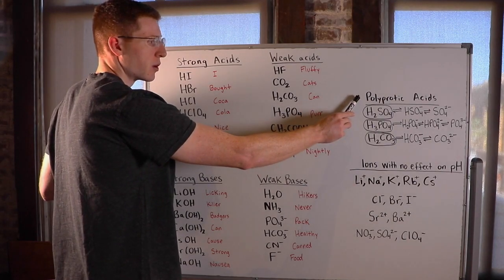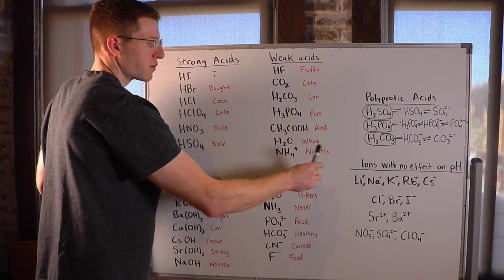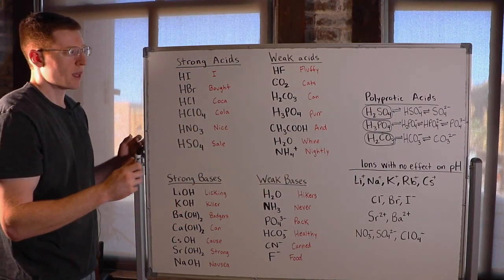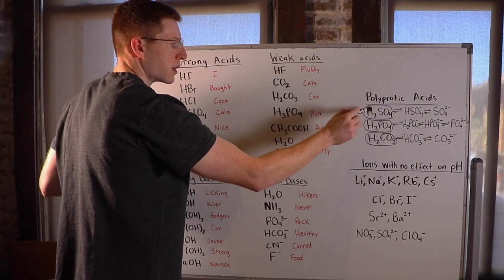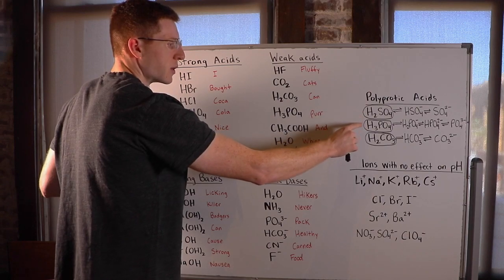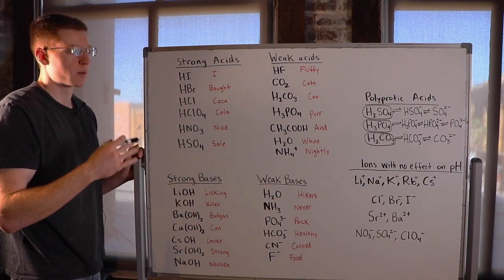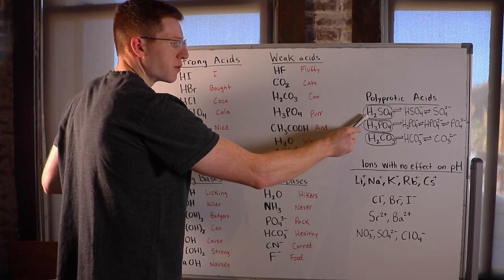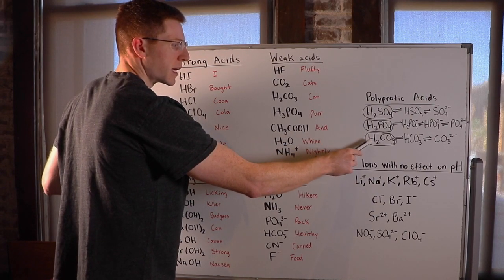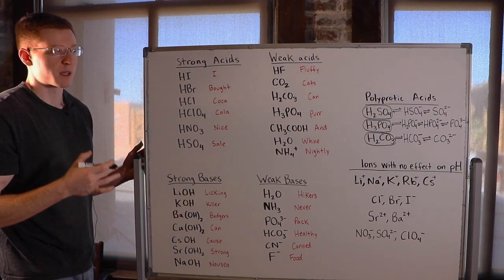Over here I have the polyprotic acids, and there are just a few of these, so they're not too hard to remember. And you should know that polyprotic means multiple protons. So this essentially refers to acids that can donate more than one proton or H+. And so you see here H2SO4, H3PO4, and H2CO3 are all examples of polyprotic acids.